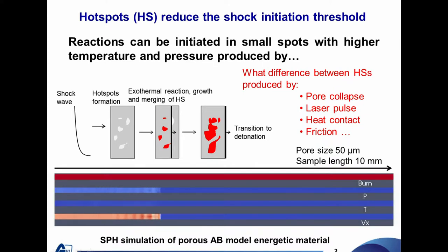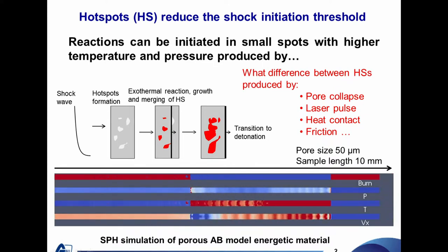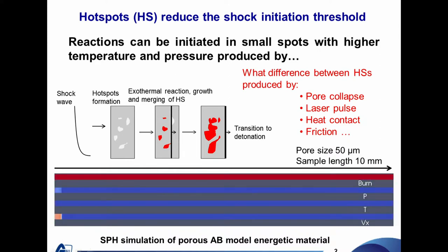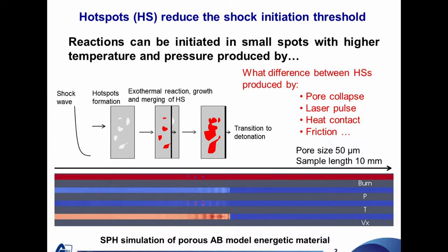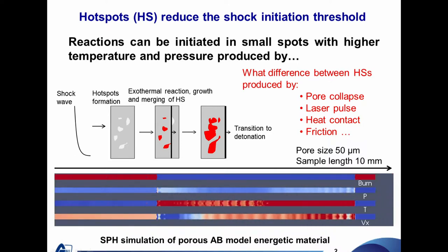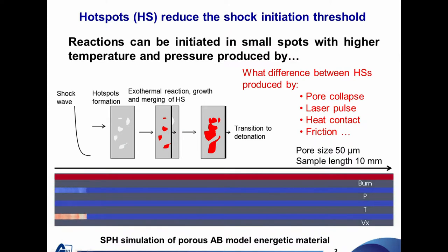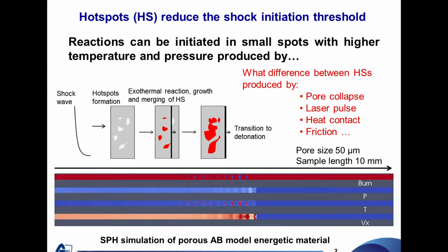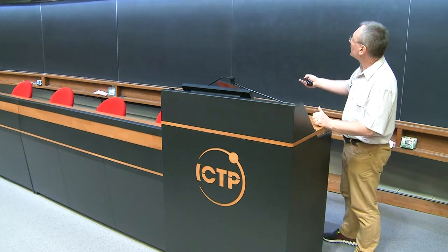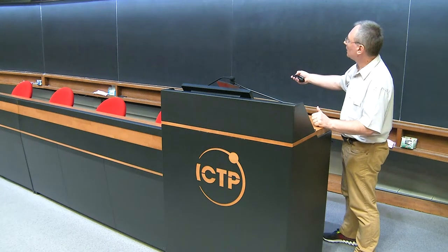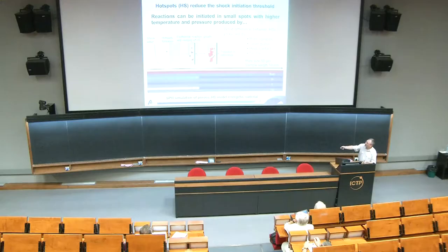Here I show our first hydrodynamic simulation — not atomistic — using a smooth particle hydrodynamics (SPH) code, performed on the basis of atomistic simulation. All chemistry, reaction rates, and equation of state were obtained from the first step of molecular dynamics simulation of a model energetic material we call AB.